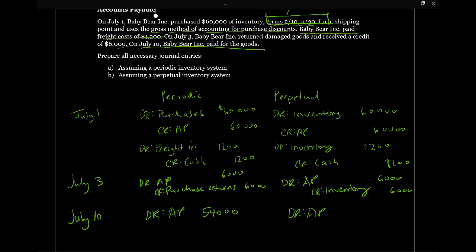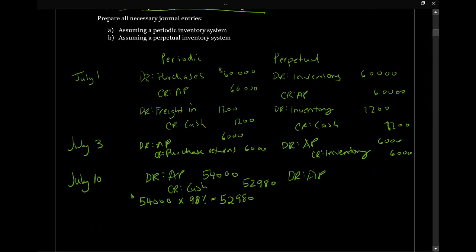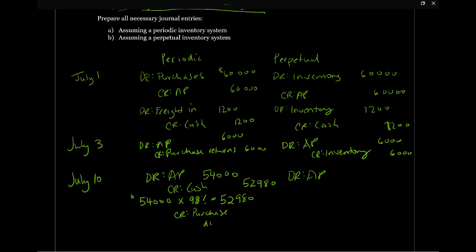We credit cash for the actual amount remitted. We calculate: $54,000 times 98% equals $52,980 — because we're getting a 2% discount. So cash is credited for $52,980. The journal entry doesn't balance yet, so the balancing piece in the periodic system is a credit to purchase discounts, which is the difference of $1,080. So we debit accounts payable $54,000, credit cash $52,980, and credit purchase discounts $1,080.